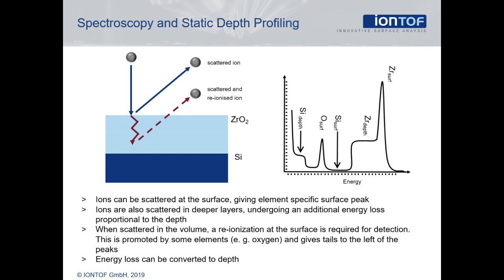A conversion from energy loss, which equals the width of the tail, to thickness of the film can be done using SHRIM or experimental calibration. For 3 kV helium, a width of 90 eV corresponds to 1 nm of organic film, and a width between 130 and 160 eV corresponds to an inorganic or oxide film.